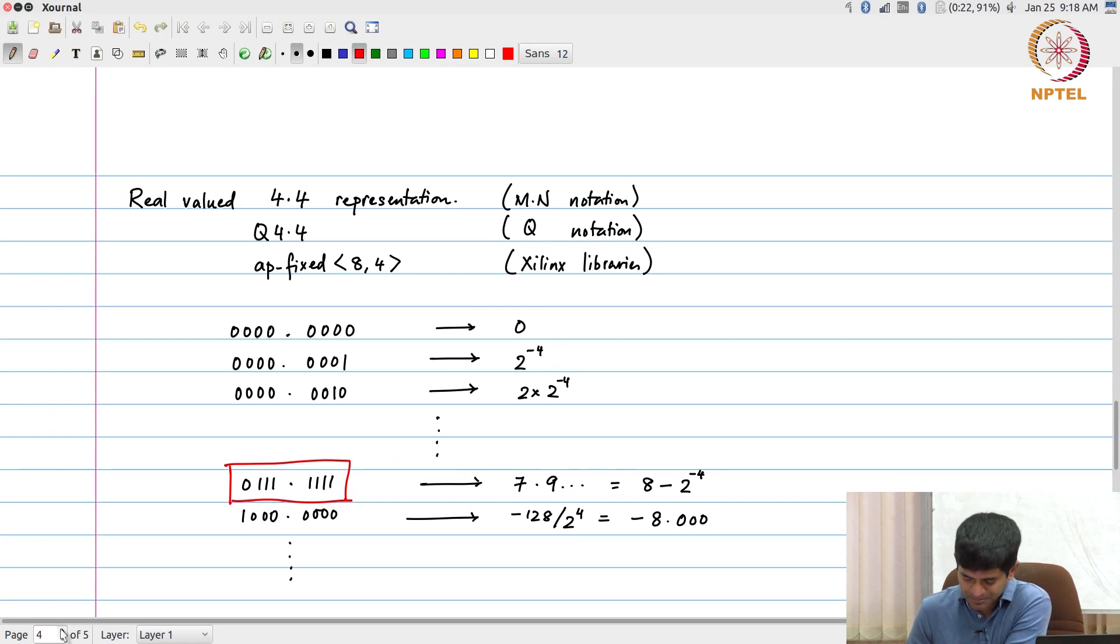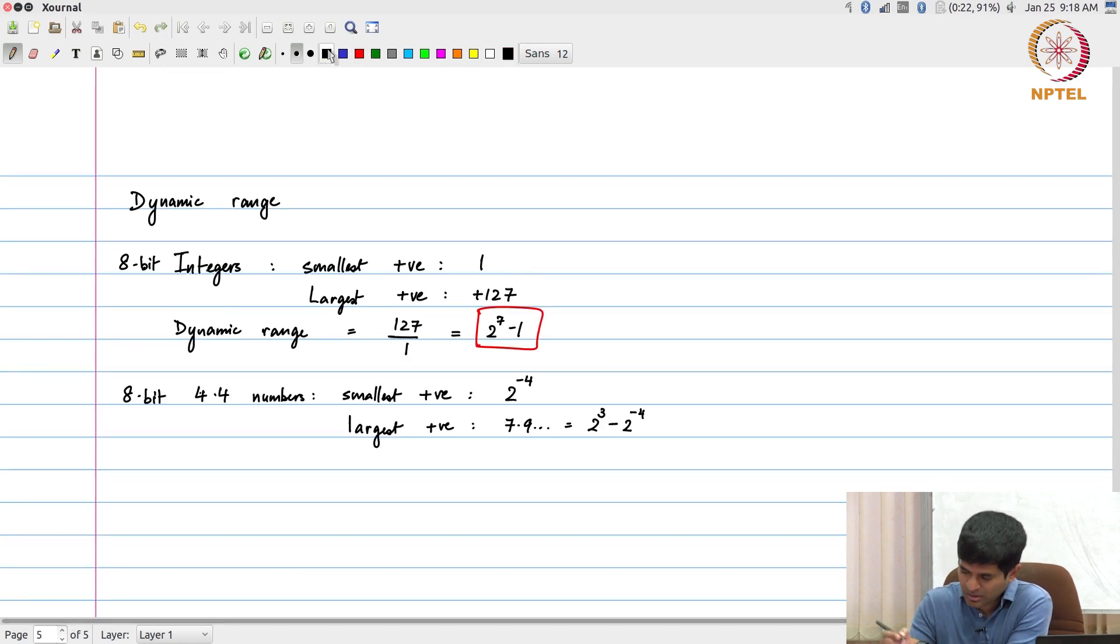So 2 power 3. So 2 power 3 minus 2 power minus 4. Once again, dynamic range is 2 power 3 minus 2 power minus 4 divided by 2 power minus 4, which is exactly equal to 2 power 7 minus 1.